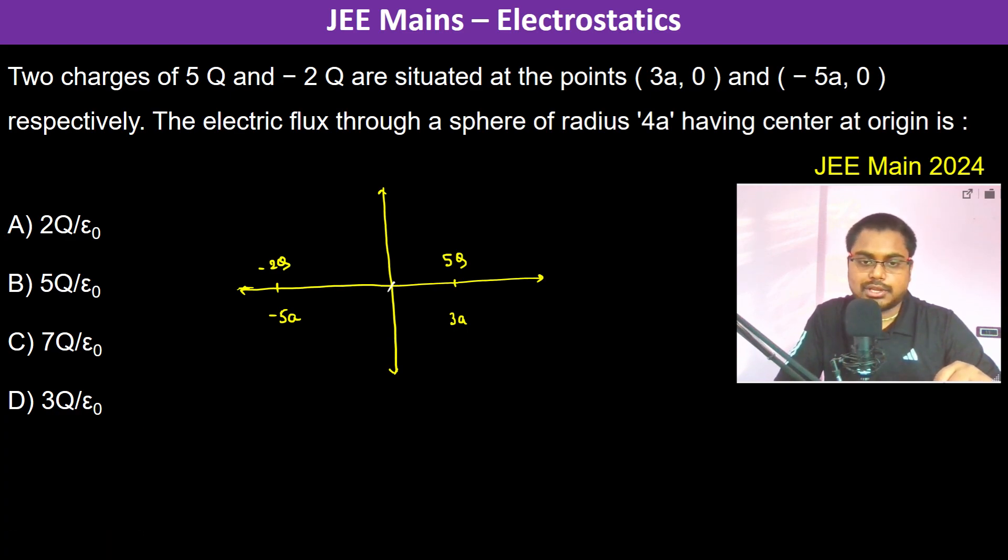The radius is 4a, so it's going to be something like this. The electric flux is going to be equal to q_enclosed divided by ε₀.